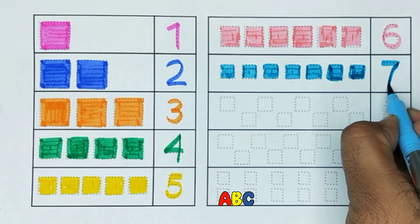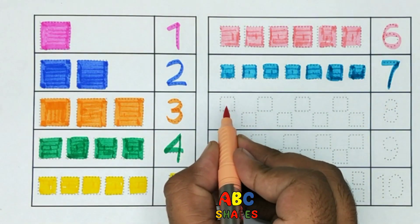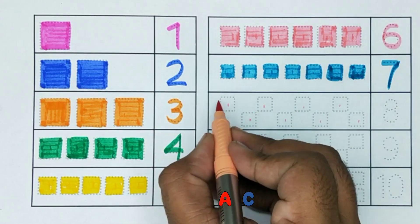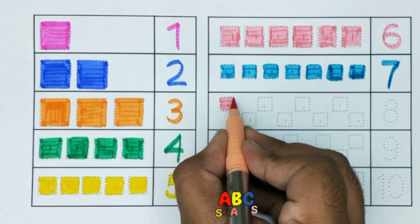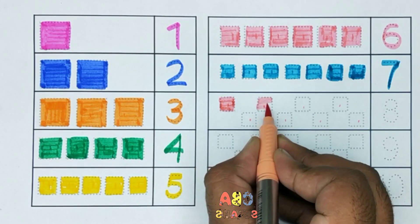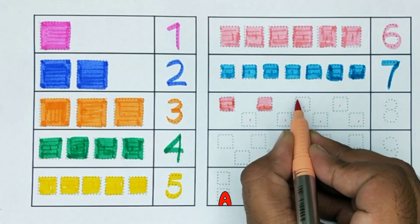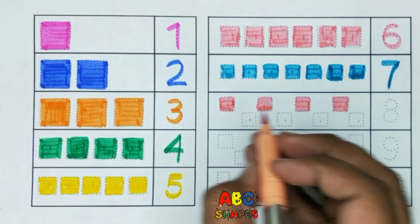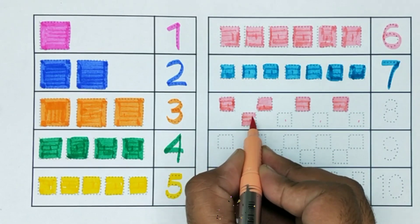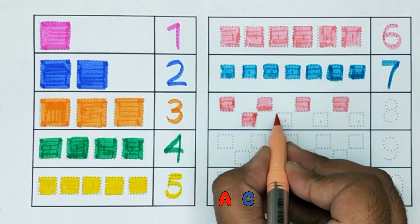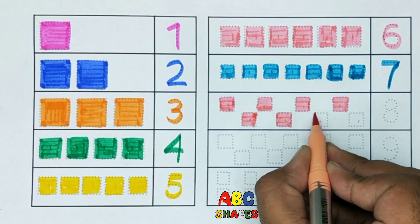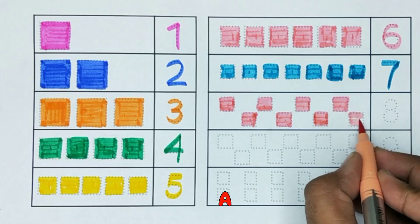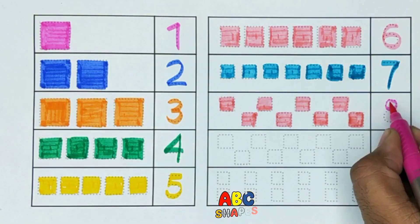This is number 7. 1, 2, 3, 4, 5, 6, 7. Now we have 8. This is number 8.